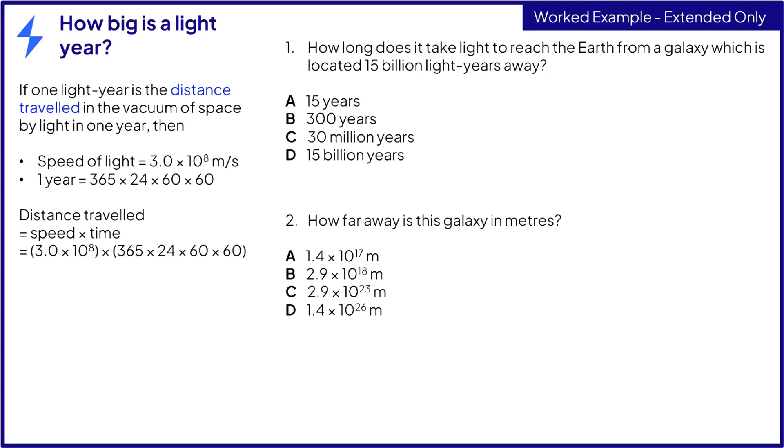Which is 3 times 10 to the 8 meters per second times 365 days times 24 hours times 60 minutes times 60 seconds. And this gives us one light year as 9.5 times 10 to the 15 meters.